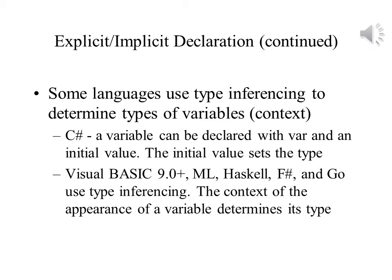Type inference is a way of determining the type for a variable or expression based on other values from which it is assigned or with which it will be used. In C#, a variable can be declared using the reserved word var and then including an initial value. This value is used to infer the type of the variable. Although this may seem like how dynamically typed variables have their initial data type set, these variables in C# are statically typed — whatever type is inferred by the initial value is the data type they are stuck with through the life of the program.